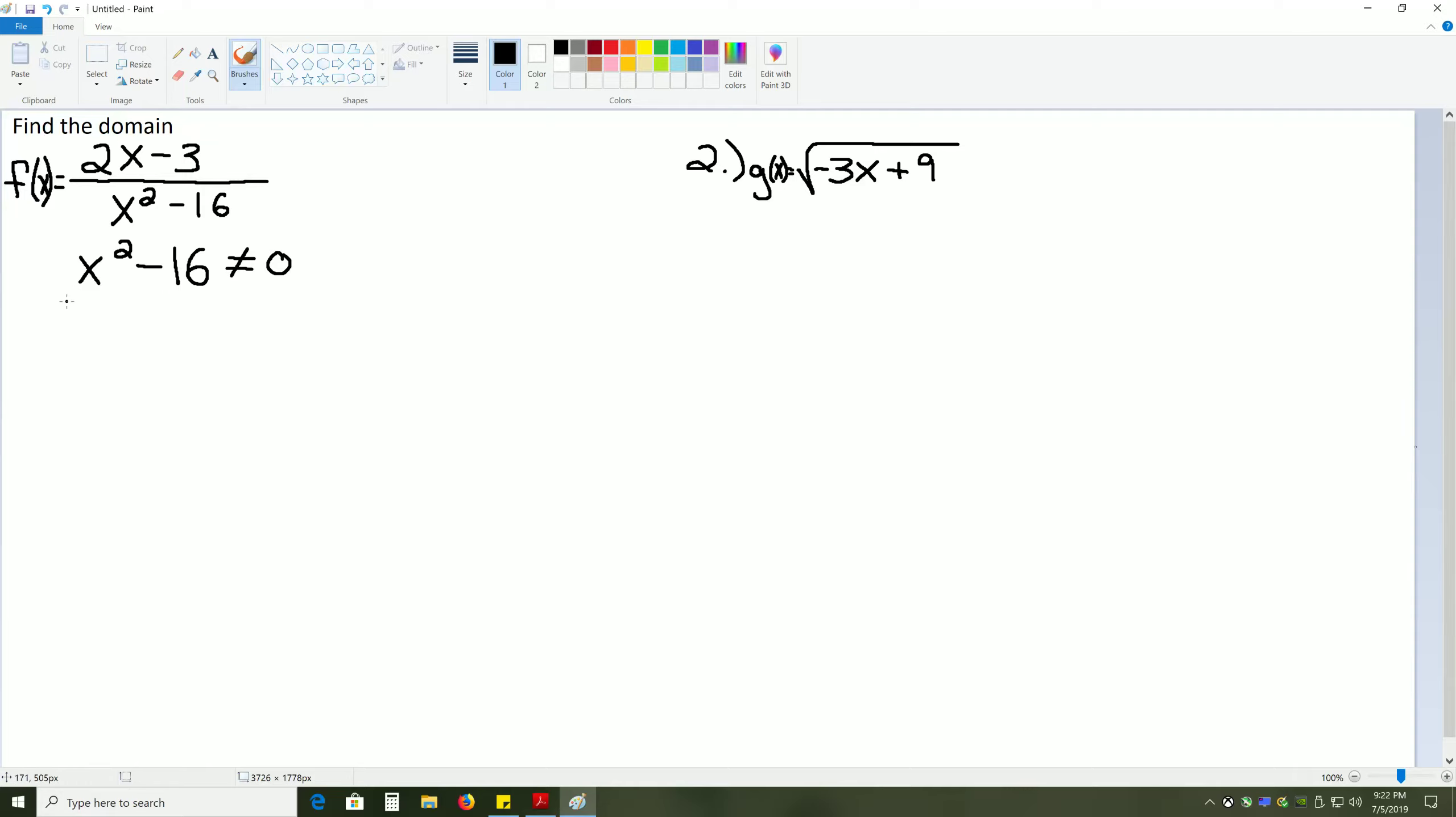Since this is a difference of squares, this will factor into x minus 4 times x plus 4. And we're setting that result equal to 0. You can use an equals or does not equals. Either way, we're saying this cannot be equal to 0.